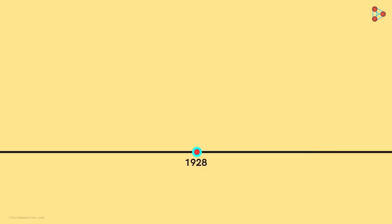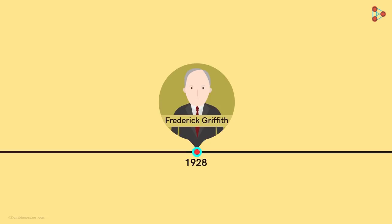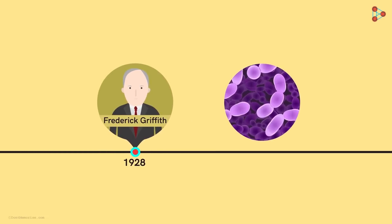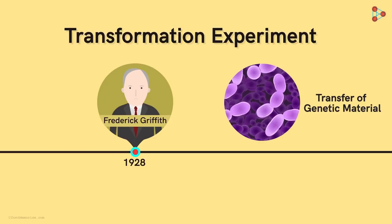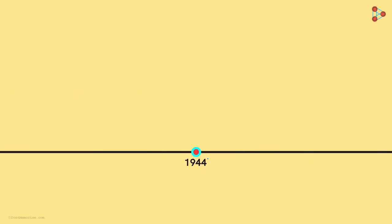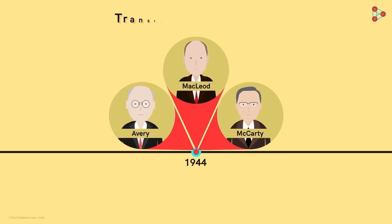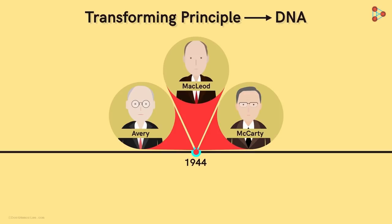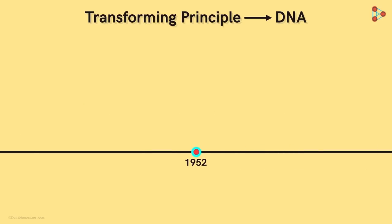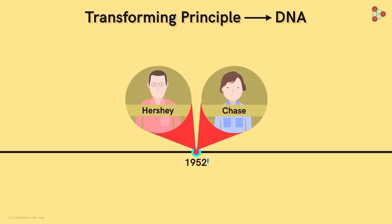It was around 1928 that a breakthrough was achieved in this field. A British bacteriologist named Frederick Griffith reported for the first time that tiny organisms like bacteria are also capable of transferring genetic information. His famous transformation experiment ignited curiosity regarding genetic material. A few years later, around 1944, three scientists named Avery, McLeod and McCarty figured out that the transforming principle — or the unit of heredity to be precise — is actually DNA.